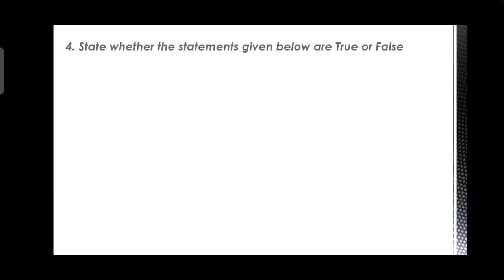Fourth question is, state whether the statements given below are true or false. First statement: stone is transparent while glass is opaque. Answer: False. Glass is transparent because it allows light to pass through it while stone is opaque because it does not allow light to pass through it.